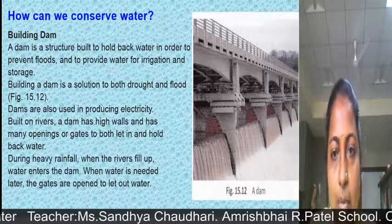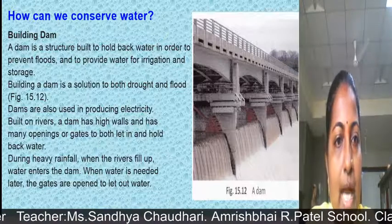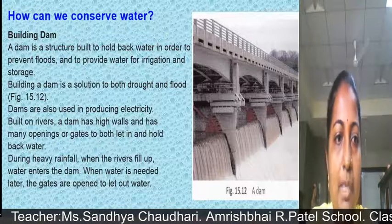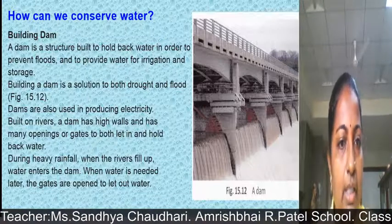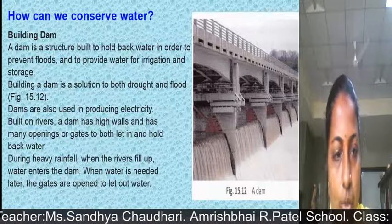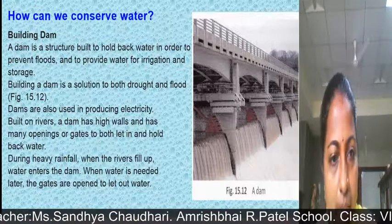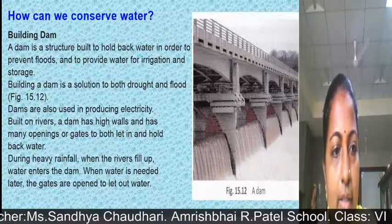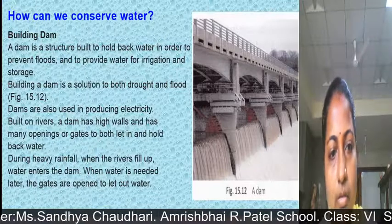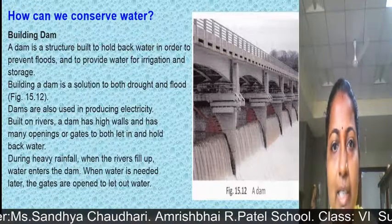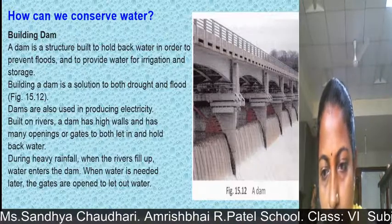A dam can also be used for producing electricity. A dam is built on a river with high walls and many openings or gates to let water in and hold it back. During heavy rainfall when rivers fill up, water enters the dam. When water is needed later, the gates are opened to let out water. By building dams we can conserve water and produce electricity.